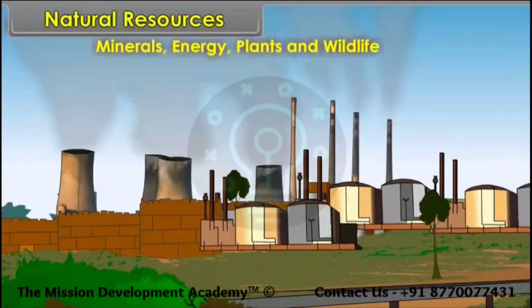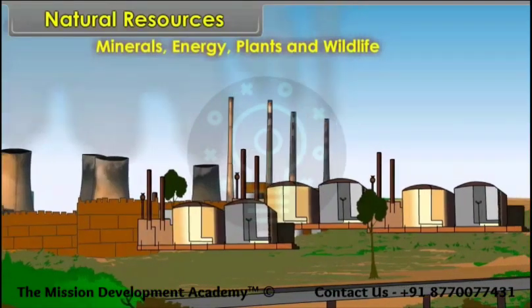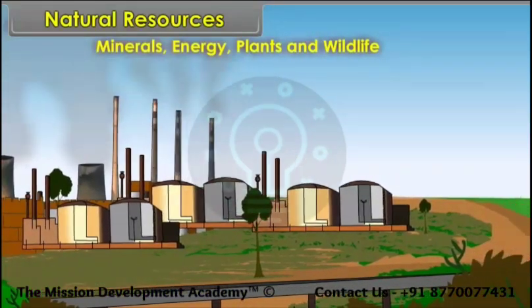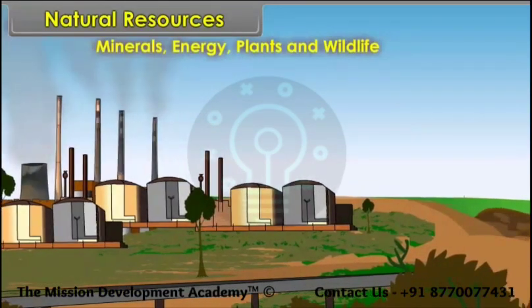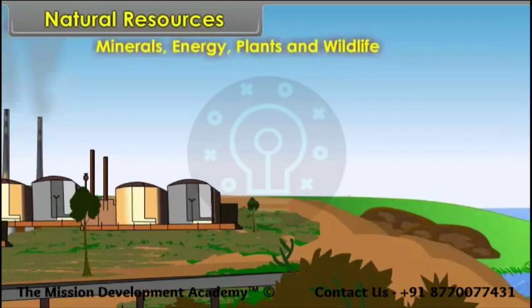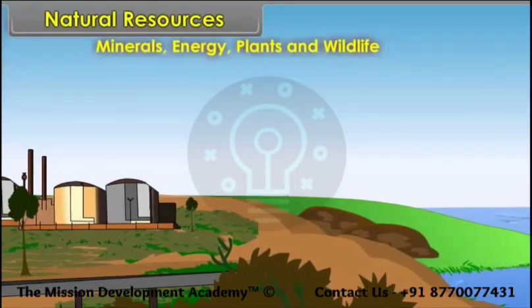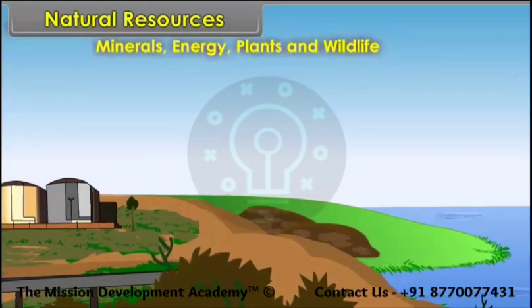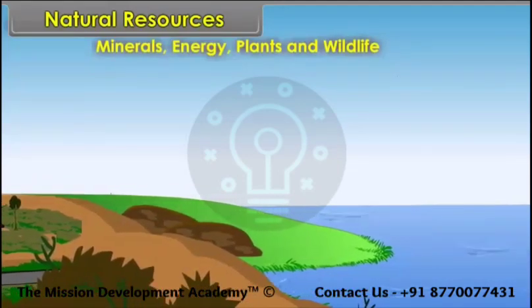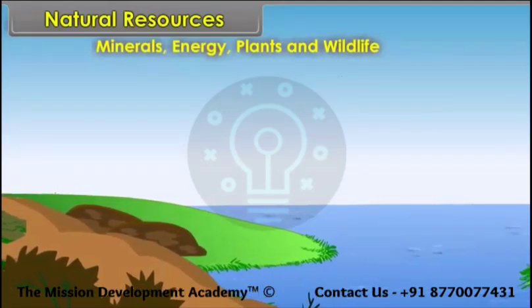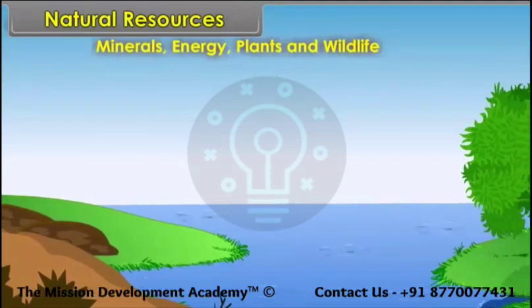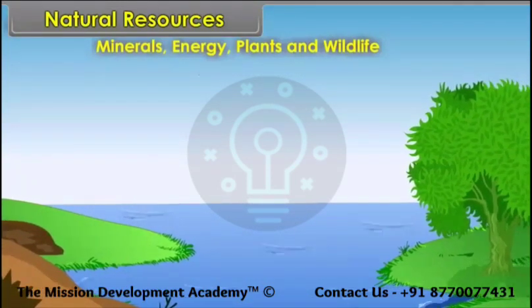Minerals and power resources are important natural resources which provide the basis for industrial development of a country. The natural growth of all types of plant life is termed as natural vegetation. The vegetation of different parts of the world is affected by the amount of sunlight and the amount of rainfall.